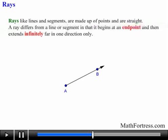A ray differs from a line or segment in that it begins at an endpoint and then extends infinitely far in one direction only. Lines extend in two directions. Rays extend in one direction only. So make sure you keep that in mind.